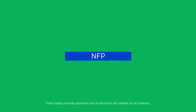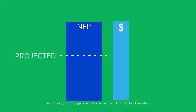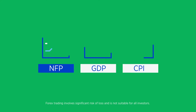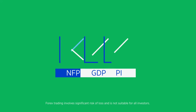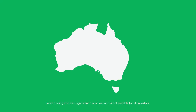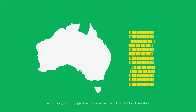Contrary to what you might think, a stronger-than-expected NFP report does not necessarily lead to a stronger U.S. dollar and can occasionally lead to a drop in the U.S. dollar. The NFP is different from other economic releases where you tend to get a more straightforward outcome. For example, a strong GDP report from Australia will cause the Australian dollar to rally most of the time.